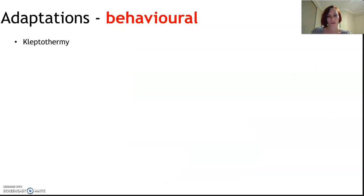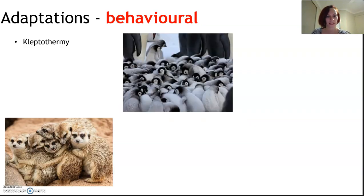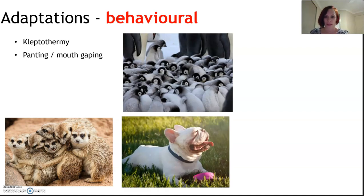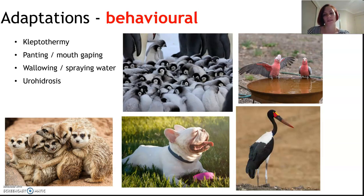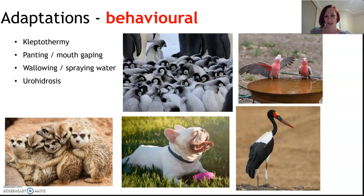Behavioral adaptations include kleptothermy — huddling together and essentially stealing warmth from one another. Dogs in particular pant or have a gaping mouth, allowing evaporative cooling. Organisms also wallow or spray water, like birds in bird baths. Urohidrosis is when birds defecate on their own legs to encourage evaporative cooling — in the same way sweat covers your body and heat evaporates off, the same thing is happening here.